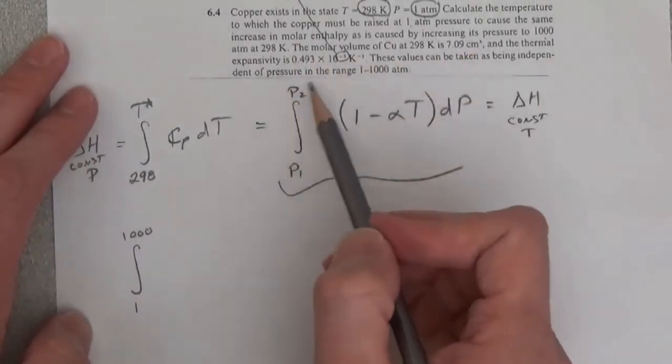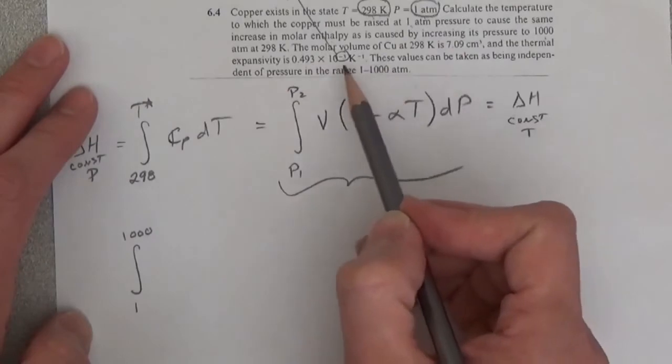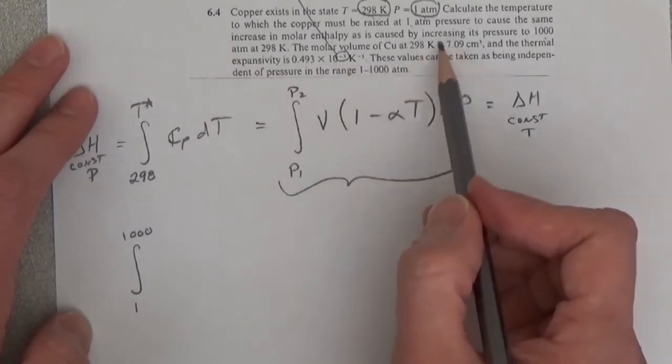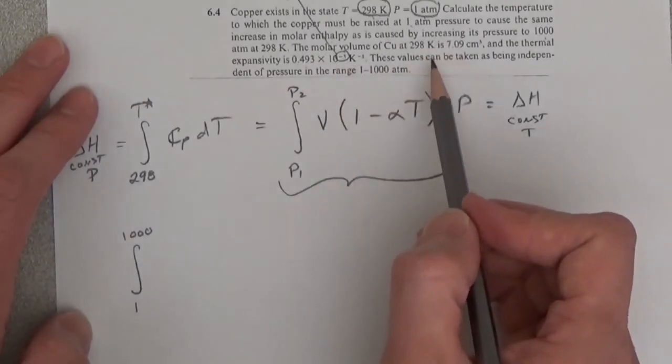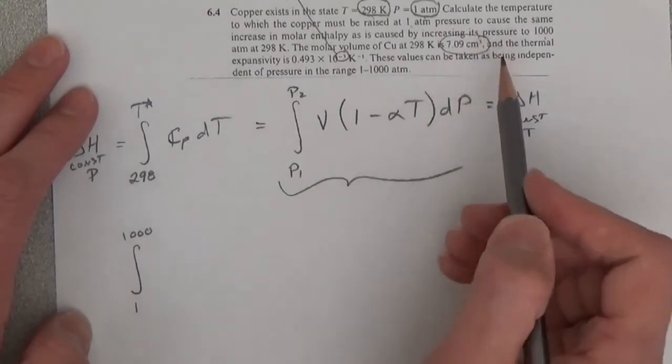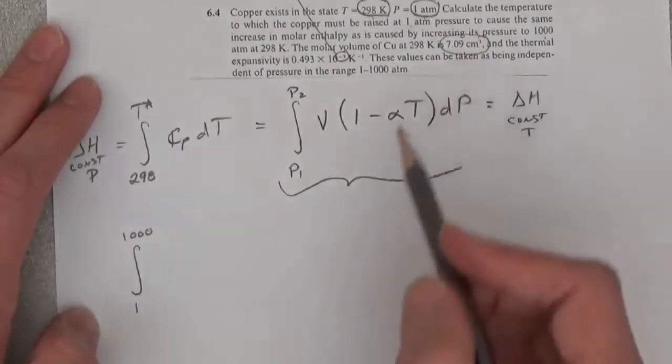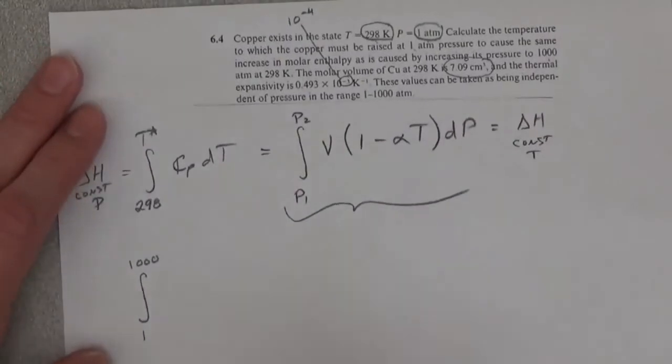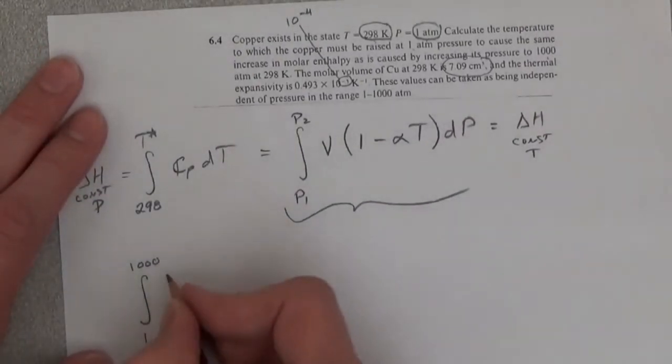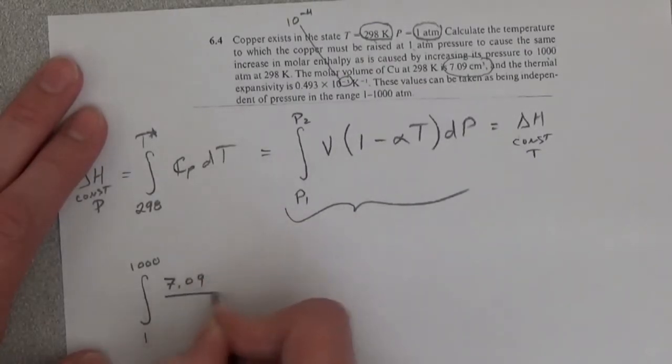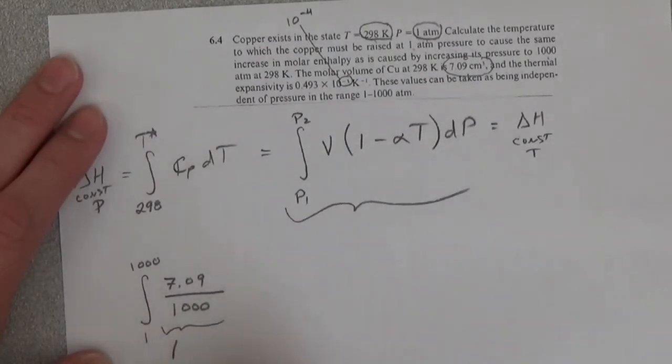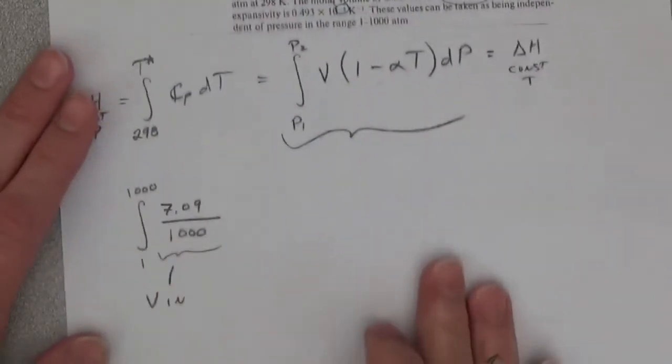Which is given as, where's that at? Here it is: 7.09 cubic centimeters. And we're going to be working in liters, so that is 7.09 divided by 1,000, so that is V in liters.